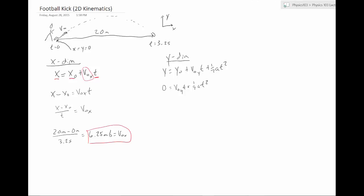And let's go ahead and solve for v zero y. I'm just going to subtract it over here. So we get minus v zero y times t is equal to one half a t squared.